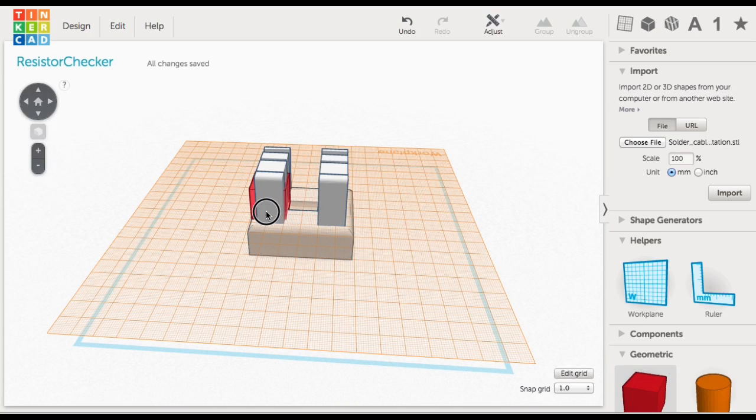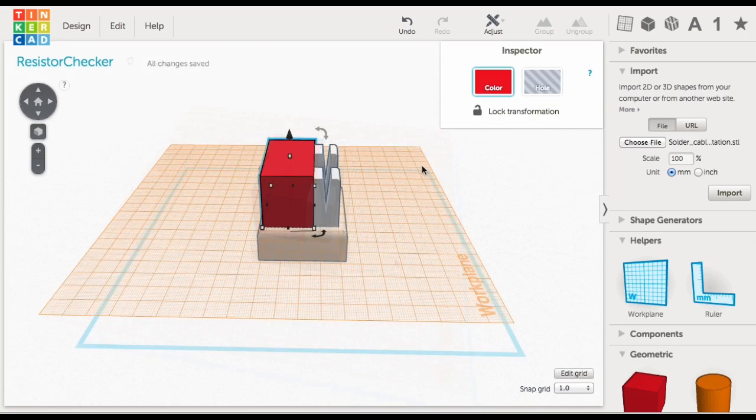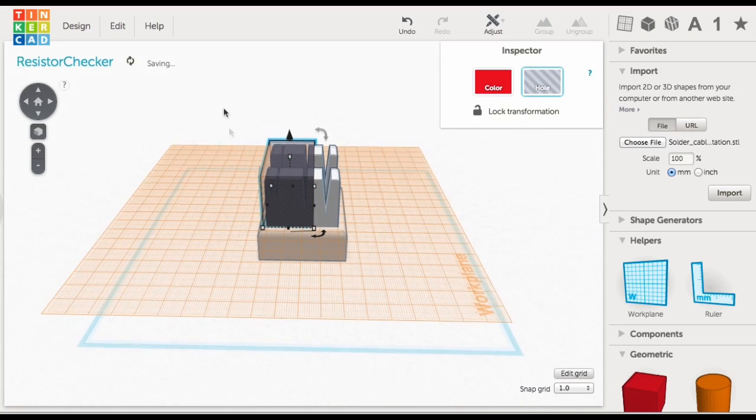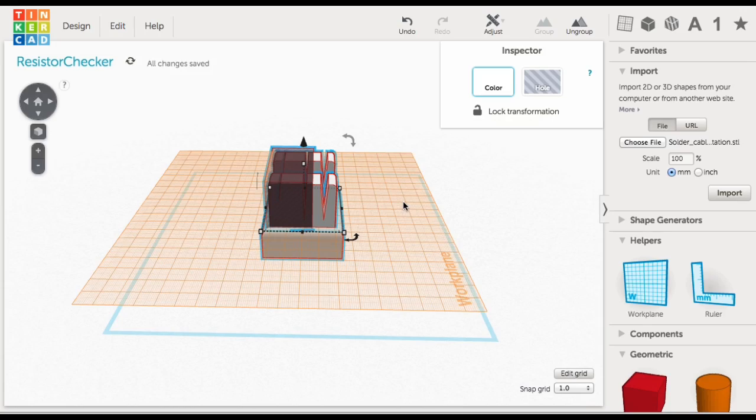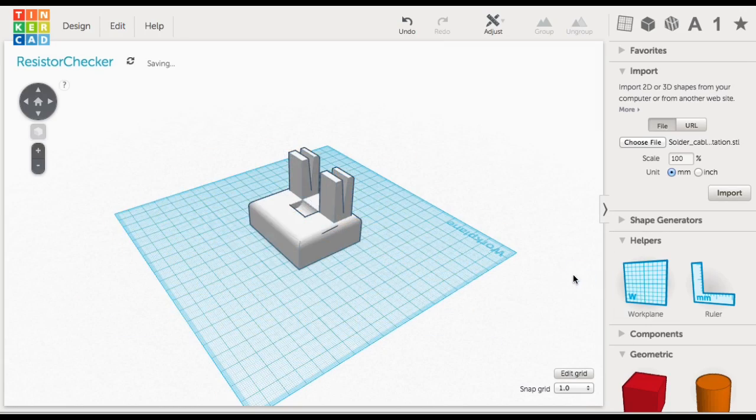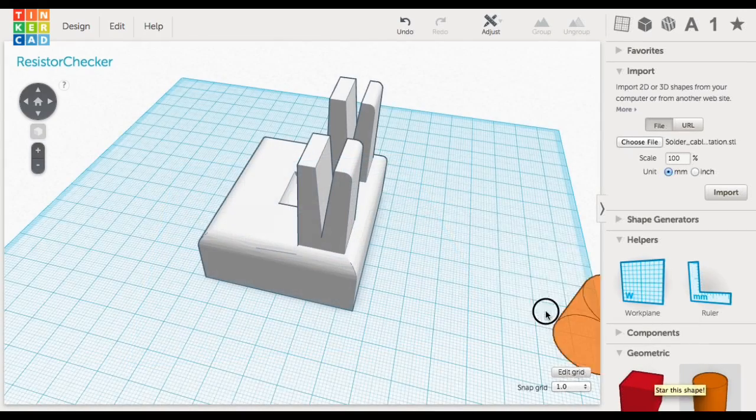So now I just needed to take away material to make it into the design I wanted it to be. I dropped a work plane here on the top surface and then brought a block in to take out the material. Basically I put a block where I didn't want material, turned it into a hole, grouped that all together, and I had my basic design. Just the two little grooves where the resistor is going to drop in.